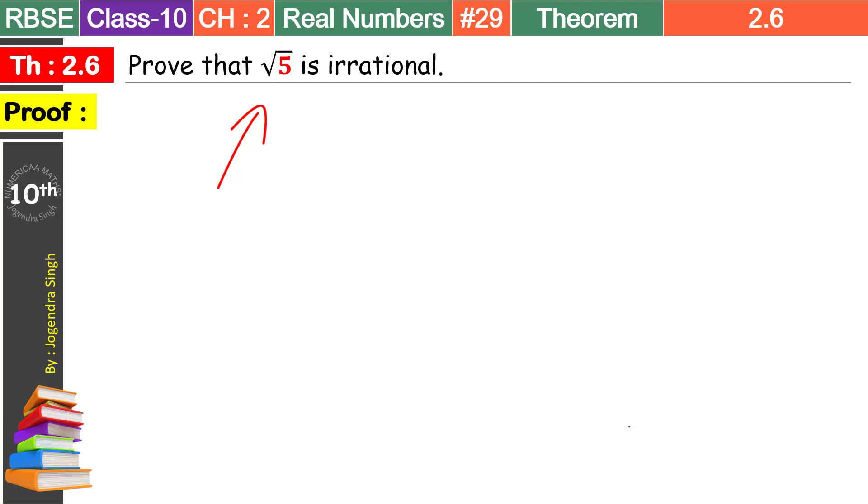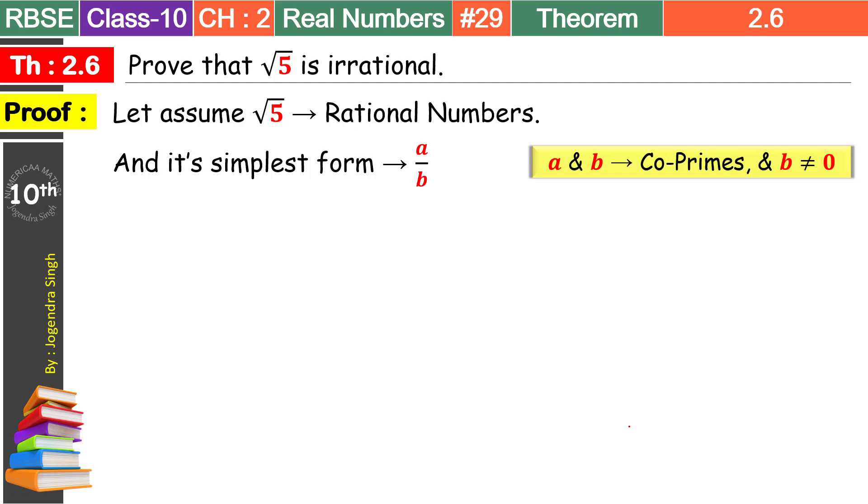Jo humare statements hote hain, unko logical tarike se prove karate chale jayenge. So, sabse pehle hum isse assume kar lete hain. Root 5 ko as rational number. So, let us assume root 5 as rational number. Aur jab yeh rational number hai, the simplest form of this root 5 is a upon b. Aur humne a upon b ko simplest form liya hai. Toh yeh co-prime hai humare. Co-prime means a aur b ke andar koi bhi common factor nahi hai.